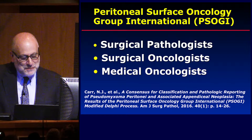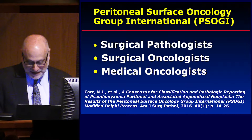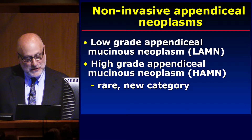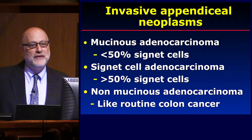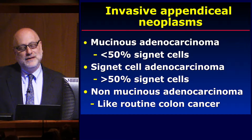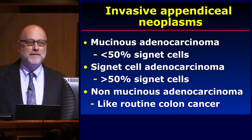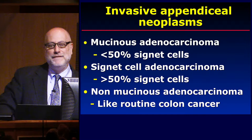This was the most recent classification from 2016, made up of surgical pathologists, oncologists, and medical oncologists, to give perspective about how we divide these neoplasms. The primary appendiceal neoplasms include the low-grade — which includes the old term 'mucocele' — a new category called the high-grade appendiceal mucinous neoplasm, and the invasive ones: mucinous adenocarcinoma when the pathologist shows less than 50% signet cells, and signet cell adenocarcinoma where there's greater than 50% signet cells. I'll show later how appendiceal mucinous neoplasms differ from routine colon adenocarcinomas.